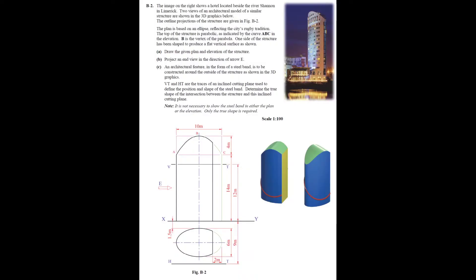This video is the 2016 higher level DCG question B2, an orthographic projection question that also includes conics. The image on the right shows a hotel located beside the River Shannon in Limerick. Two views of an architectural model of a similar structure are shown in the 3D graphics below.